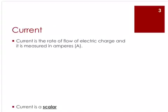Since electric current consists of moving electric charges, we measure electric current by determining the amount of electric charge that passes through a conductor per unit time. Electric current is the rate of flow of electric charge and is measured in amperes. The equation we have is I for current is equal to the charge flowing past a point per unit time.